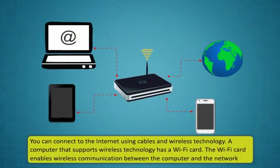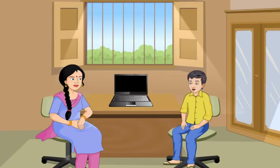You can connect to the internet using cables and wireless technology. A computer that supports wireless technology has a Wi-Fi card. The Wi-Fi card enables wireless communication between the computer and the network. Some friends have internet facility in their mobile phones. How can someone get the internet in a mobile phone, Didi?